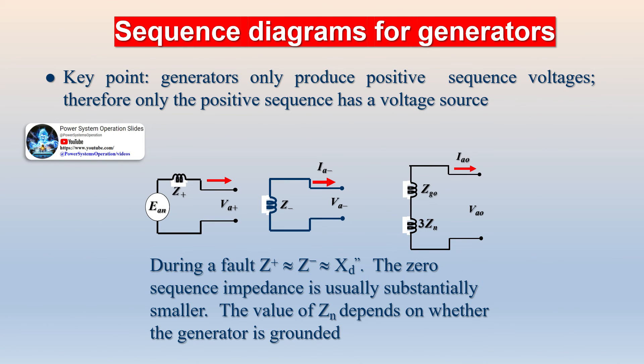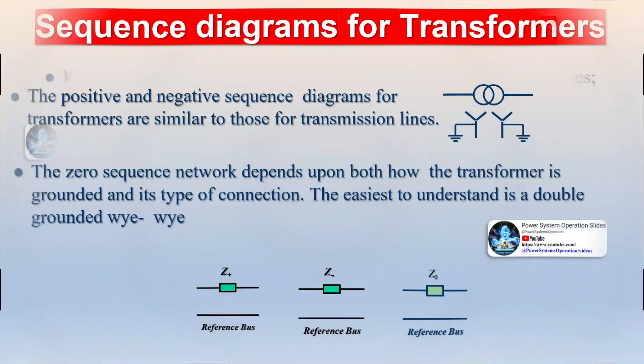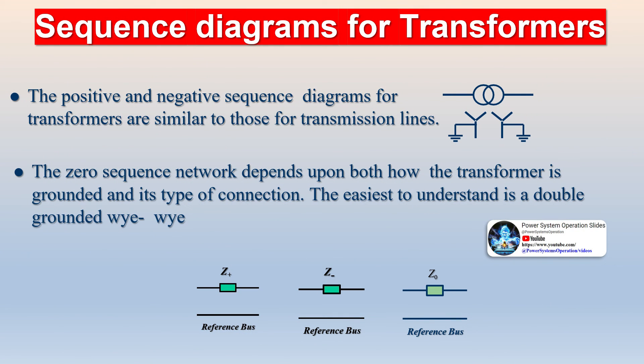Under a no-fault condition, the power system is considered to be essentially a symmetrical system and therefore only positive sequence currents and voltages exist. At the time of a fault, positive, negative, and possibly zero sequence currents and voltages exist.